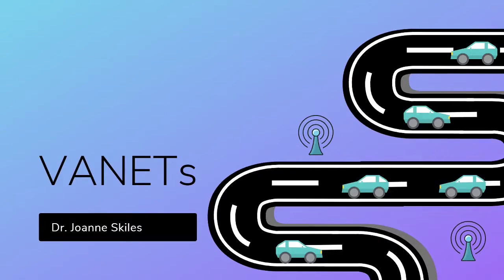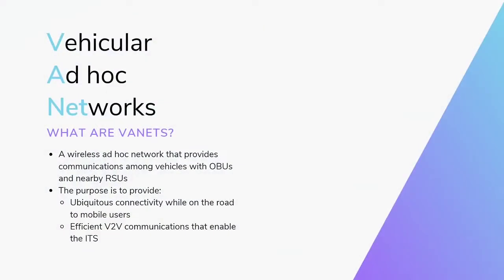Hi everyone, my name is Joanne Skiles and I want to give you a quick overview of VANETs. VANET stands for Vehicular Ad Hoc Networks. A VANET is a wireless ad hoc network that provides communication among vehicles with an onboard unit or OBUs and nearby roadside units, RSUs.